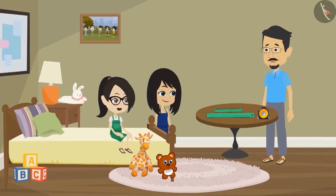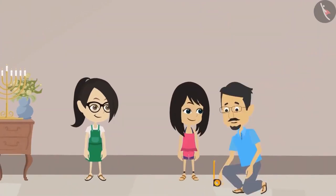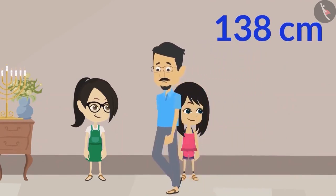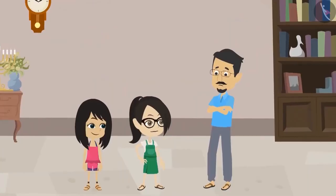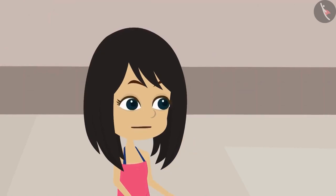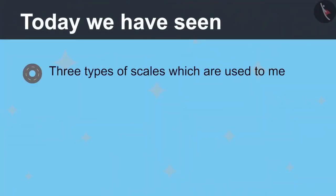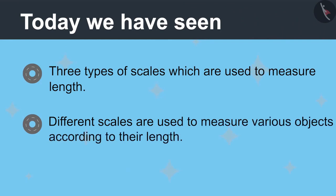Uncle, can you measure our height? Sure. You both stand against the wall. Neha, your height is 138 centimeters. And Vandana, your height is 140 centimeters. This scale is very good. With this, we can measure long objects. Can we take this scale? We will measure the length of more objects, Papa. Why not? You can keep this scale with you. Today we have seen three types of scales which are used to measure length, and different scales are used to measure various objects according to their length.